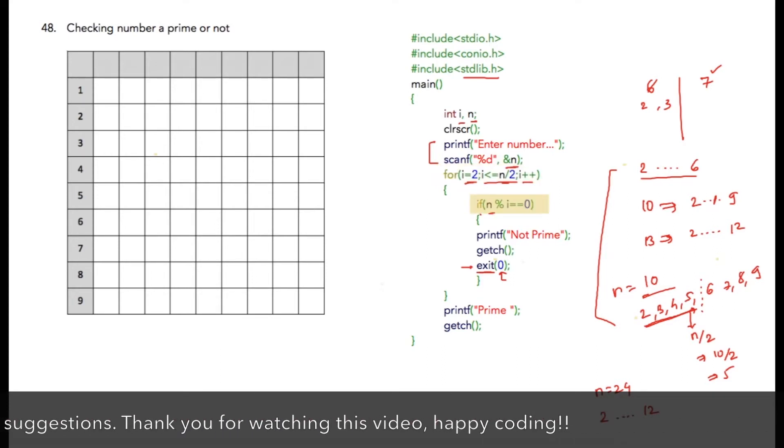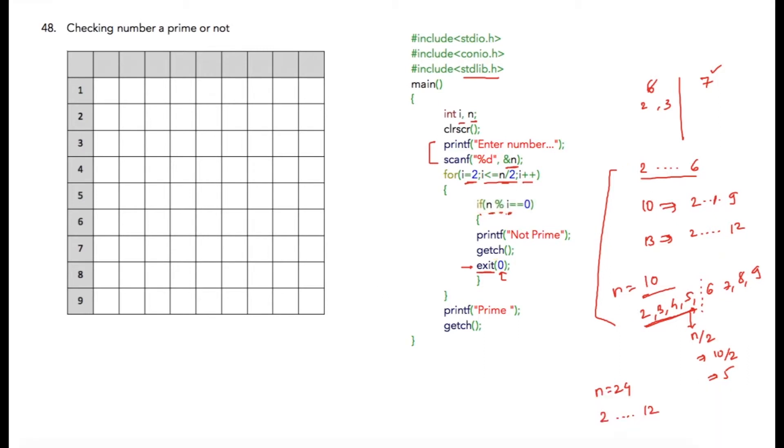And then inside of loop we are checking whether n is divisible by current value of i, so we are using modulus operator. So if the number is completely divisible, then modulus operator will give us result as 0. If the number is divisible by any number from the range, then obviously number is not prime.